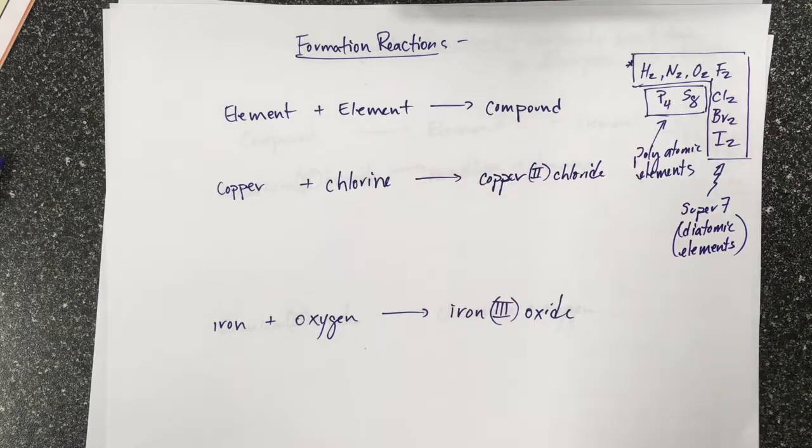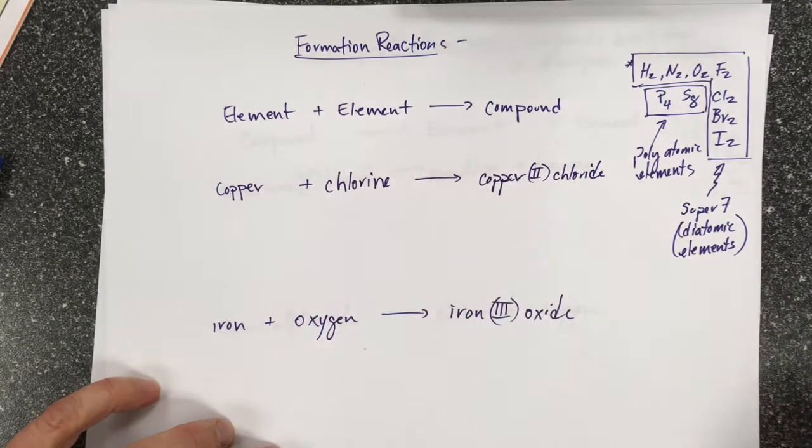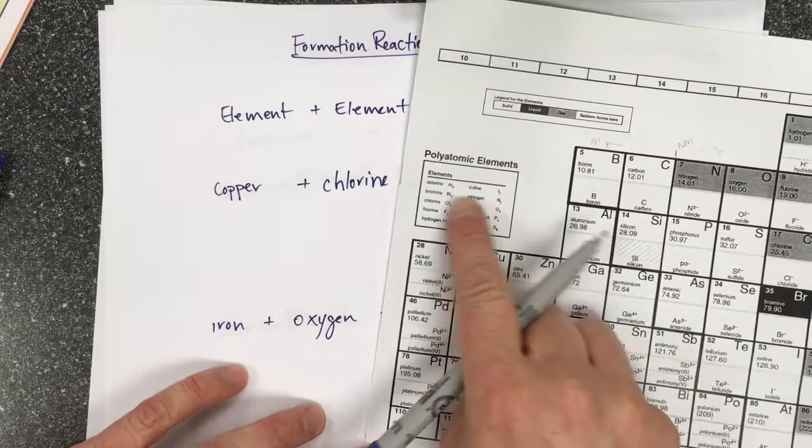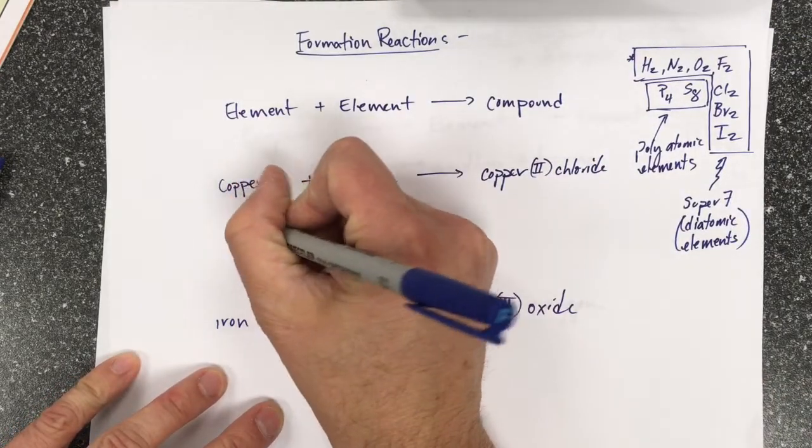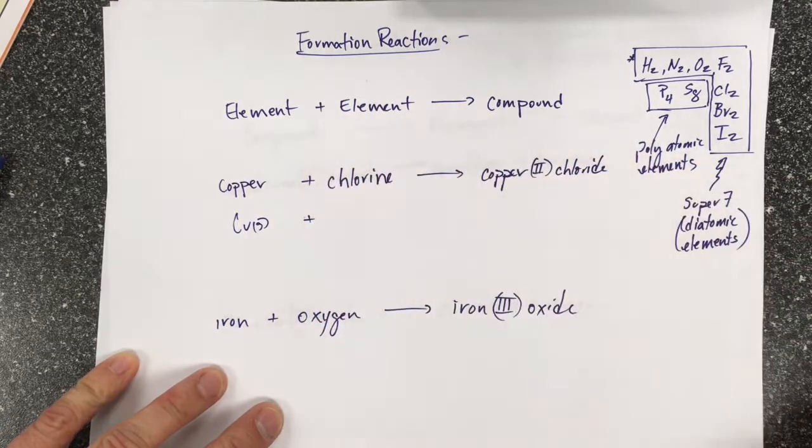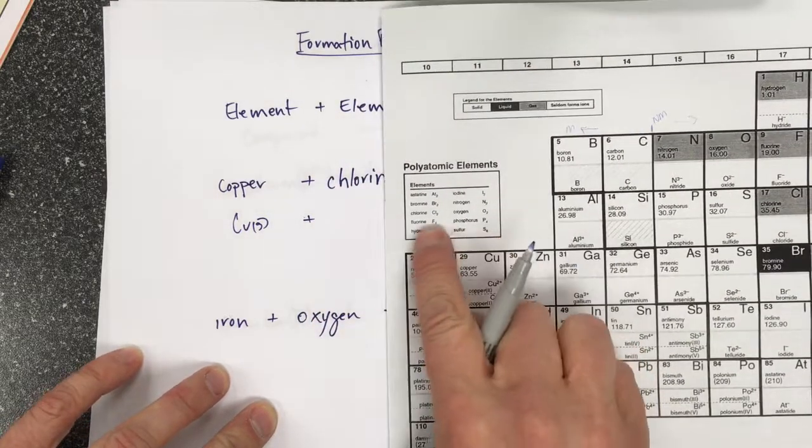If we look at copper, copper in the periodic table is here and it is not listed as a polyatomic element. Because it is not a polyatomic element, it's Cu solid, and chlorine is a polyatomic element.